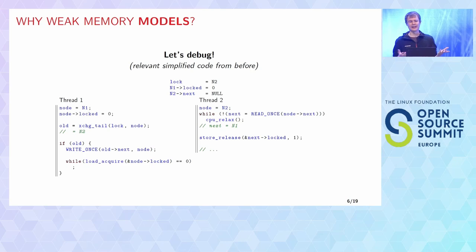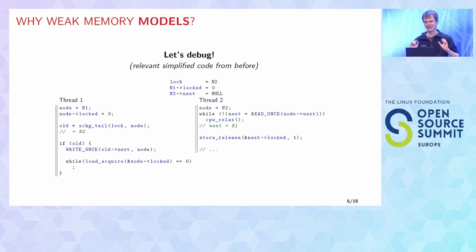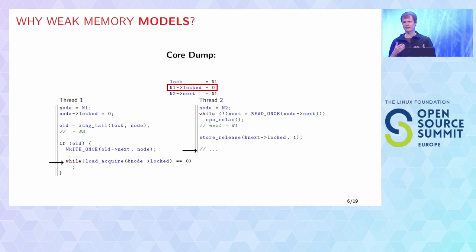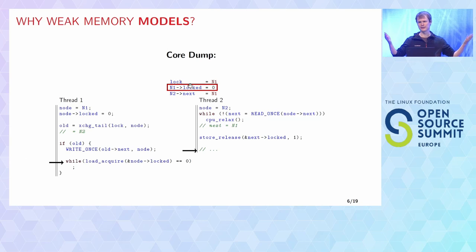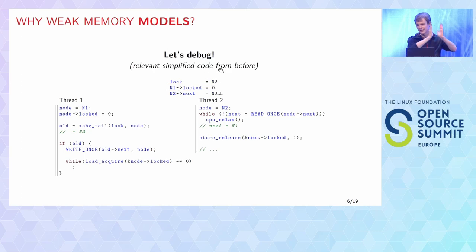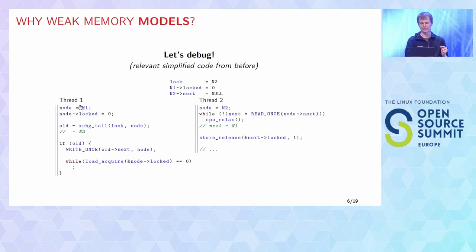Let's try to debug this code. I've cut it down to a very small part where the problem is. The way we debug code is: we get the watchdog to trigger that the kernel is hanging, it creates a core dump, and we look at the core dump and try to guess what happened. We have two threads: thread two is the current lock holder, thread one is trying to acquire the lock. The lock variable's value is a queue tail pointer to threads wanting to enter the critical section. Thread one wants to insert its own node n1 into the queue using an atomic exchange, which reads the current value n2 and stores n1.